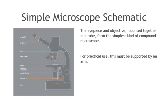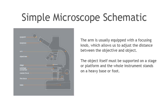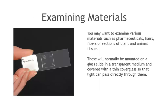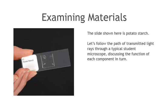For practical use, this must be supported by an arm. The arm is usually equipped with a focusing knob, which allows us to adjust the distance between the objective and object. The object itself must be supported on a stage or platform, and the whole instrument stands on a heavy base or foot. Opaque specimens are examined by reflected light. Transparent and semi-transparent specimens are normally viewed by transmitted light. You will probably be working entirely with transmitted light, traveling up from below the stage and continuing into the objective. You may want to examine various materials such as pharmaceuticals, hairs, fibers, or sections of plant and animal tissue. These will normally be mounted on a glass slide in a transparent medium and covered with a thin cover glass so that light can pass directly through them. The slide shown here is potato starch.